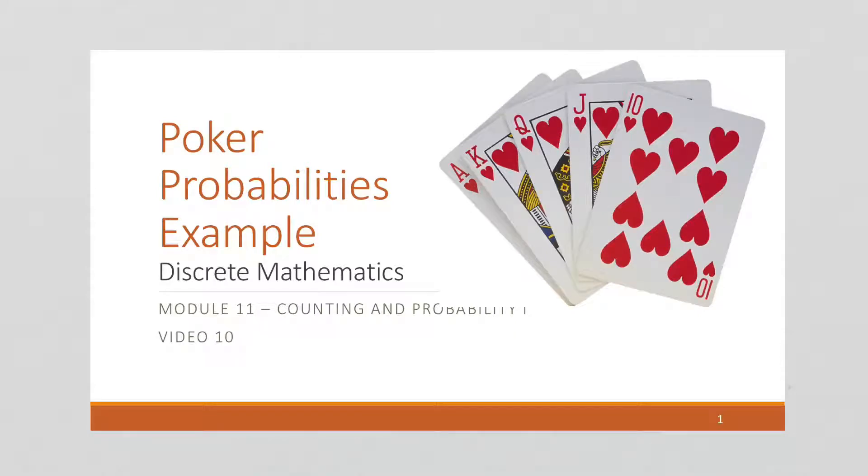A probability course would not be complete unless there are examples given to gambling. It's sort of a tradition. So we're going to talk about the game of poker, which is a probabilistic game, and we're going to calculate the probabilities of getting certain hands in poker.